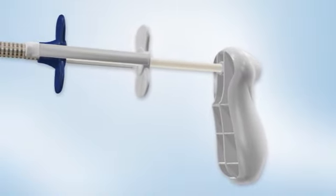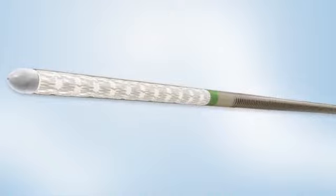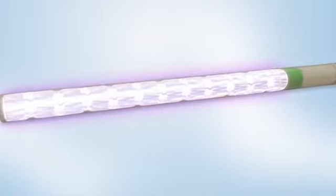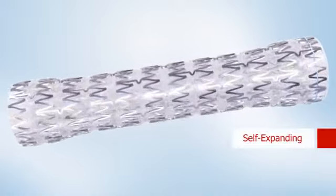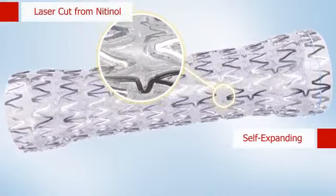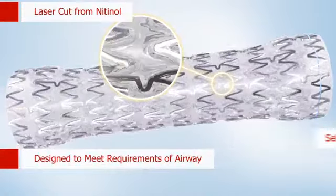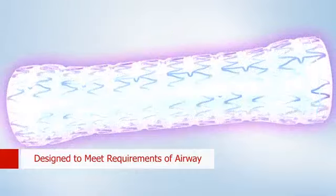The Arrow Tracheobronchial Stent System is comprised of a dedicated delivery system and a radiopaque tracheobronchial stent. The Arrow is a self-expanding stent laser cut from Nitinol and designed to meet the specific anatomical requirements of the airway.